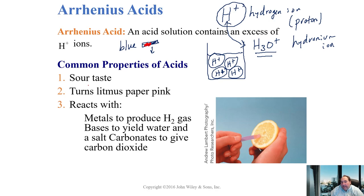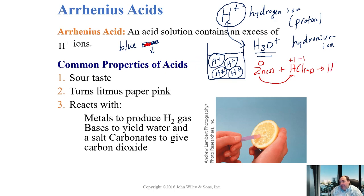Acids also react with metals to produce hydrogen gas and react with carbonates to produce carbon dioxide — reactions we saw earlier. For example, zinc metal reacted with hydrochloric acid: zinc kicks out the hydrogen (H+ and Cl-). Hydrogen gas bubbles out; zinc gains a +2 charge and bonds with chlorine to make zinc chloride. This is a single replacement reaction.